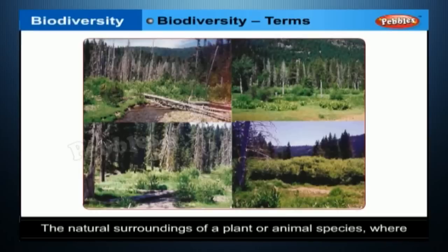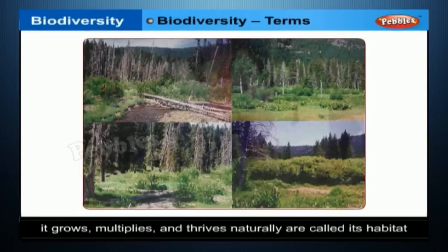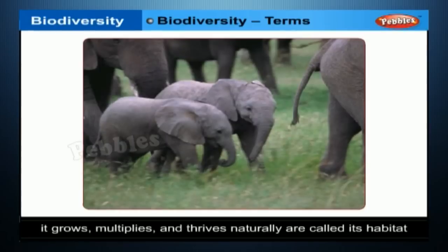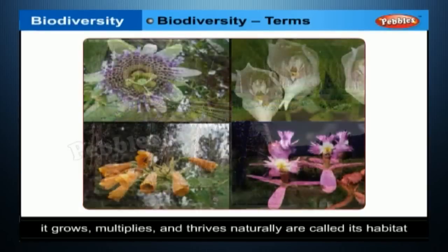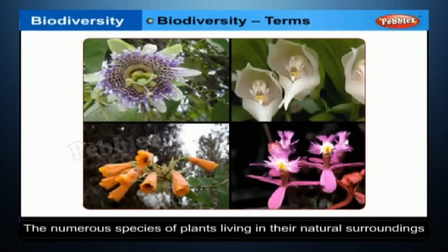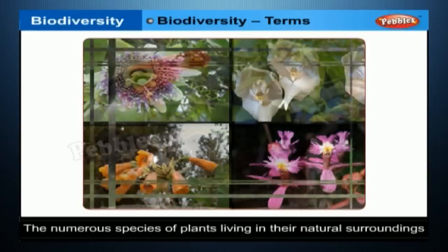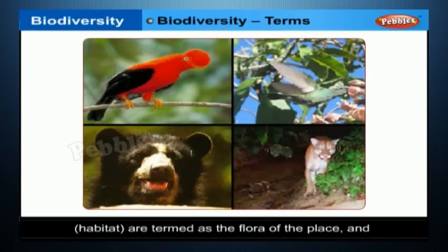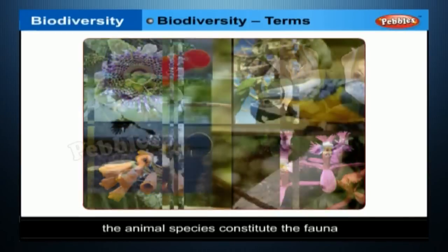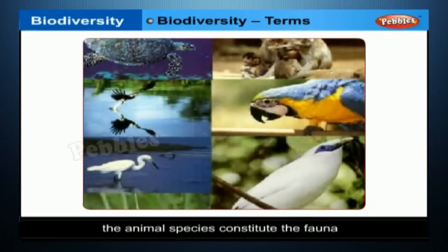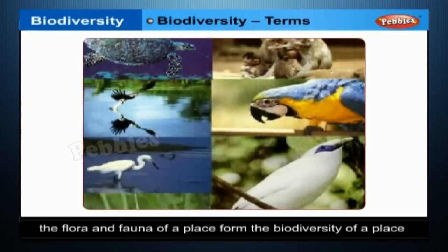HABITAT: The natural surroundings of a plant or animal species where it grows, multiplies and thrives naturally are called its HABITAT. FLORA AND FAUNA: The numerous species of plants living in their natural surroundings are termed as the FLORA OF THE PLACE, and the animal species constitute the FAUNA. Together, the flora and fauna of a place form the BIODIVERSITY OF A PLACE.